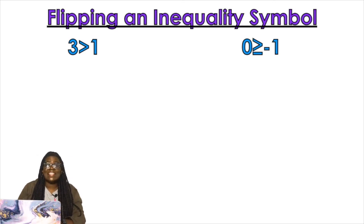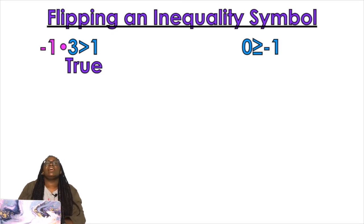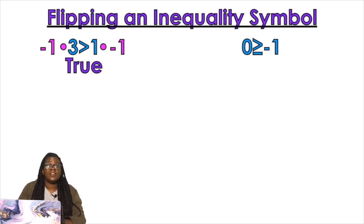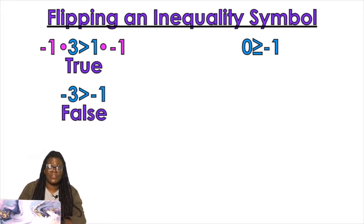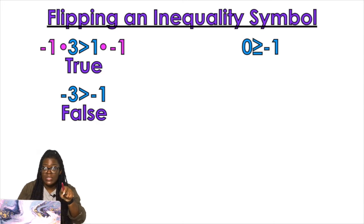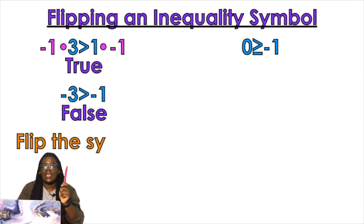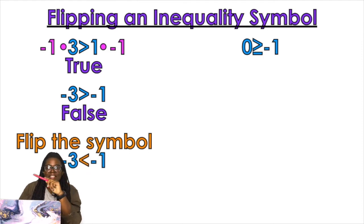Why do we flip inequality symbols? Three is greater than one — that's a true statement. Let's say I multiplied both sides by negative one, which is fair to do in math. Three times negative one is negative three, and one times negative one is negative one. Is negative three greater than negative one? It is false. So to make that statement true, you flip the symbol — because negative three being less than negative one makes it true.